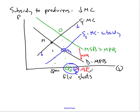Either way, the previously existing deadweight loss is eliminated. We have moved production up from QM — what the market gave us — to QO, which is what we want. You can't always get what you want, but if you try sometime, you just might find you get what you need.